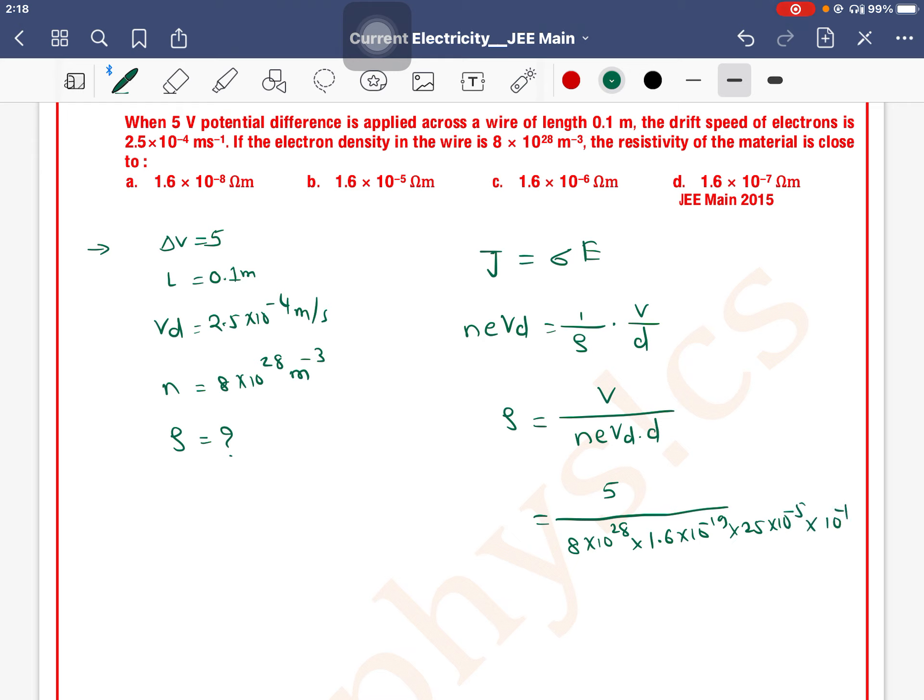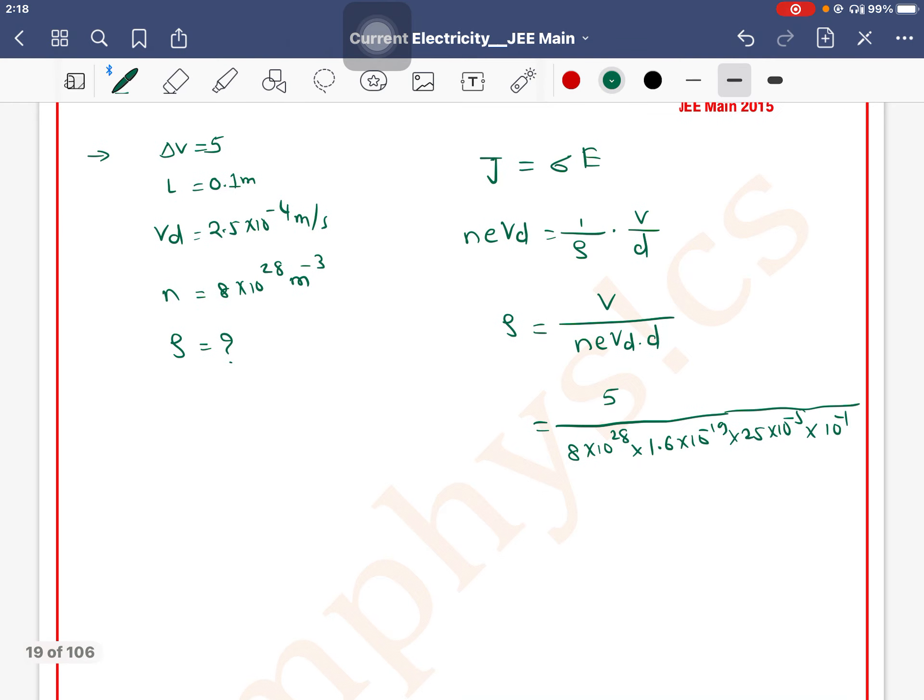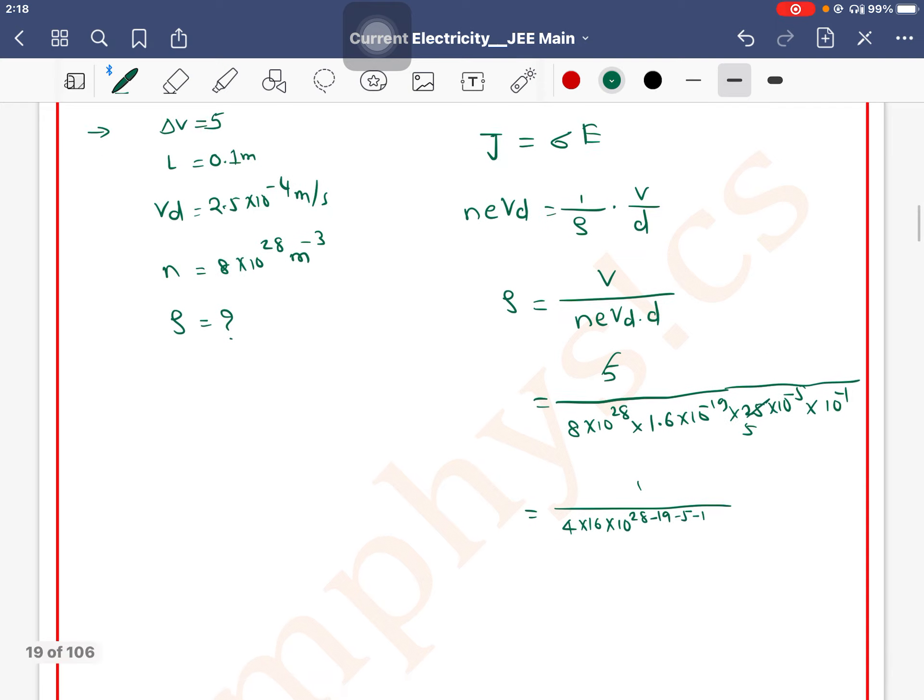Vd is 2.5 × 10^-5 and length is 10^-1, that is 0.1. So this becomes 5 into, 5 cancels, 8 into 5 is 40, so we can write this as 4 × 16 × 10^28 minus 19 minus 5 minus 1.